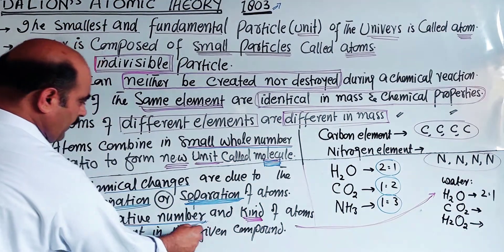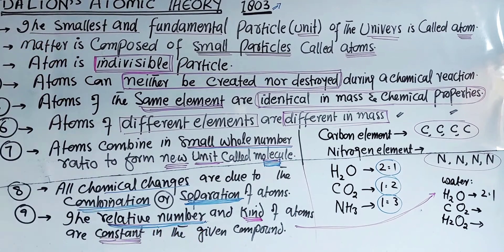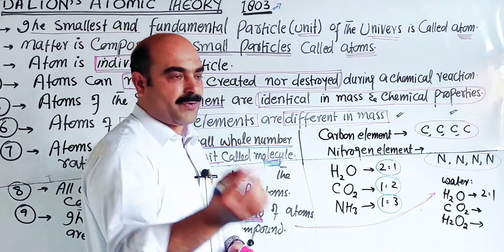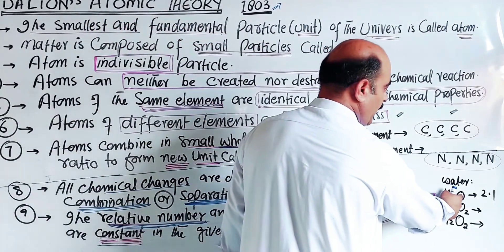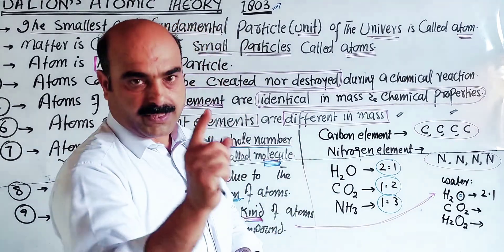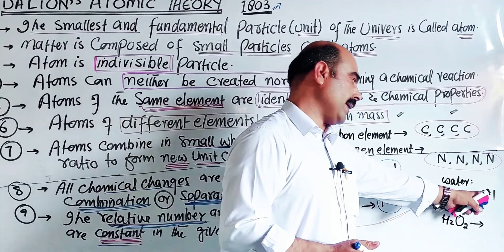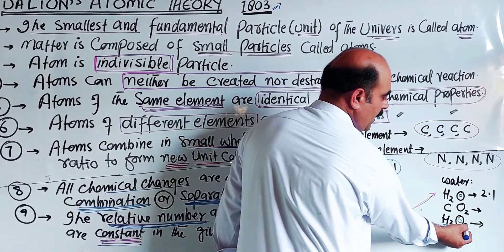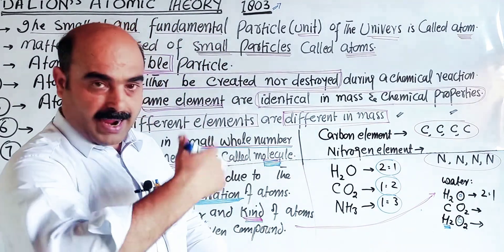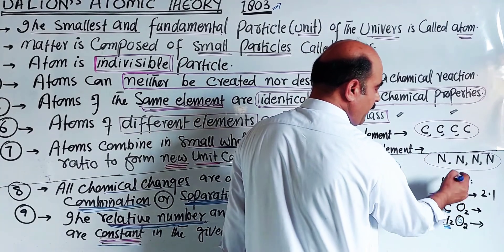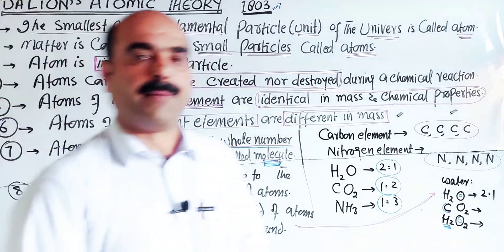Last point — the relative number and kind of atoms with respect to other atoms is constant in a given compound. The relative number of hydrogen atoms with respect to oxygen atoms in a given compound does not change. These are all the main points of Dalton's Atomic Theory.